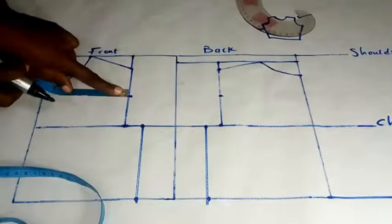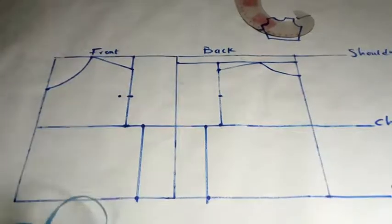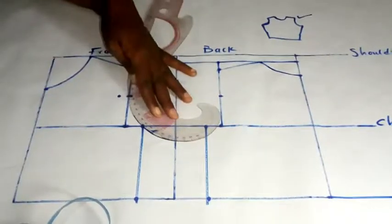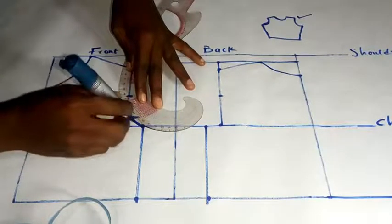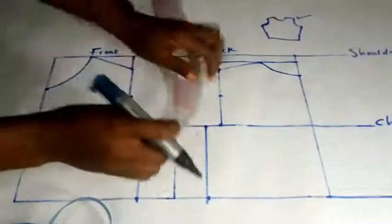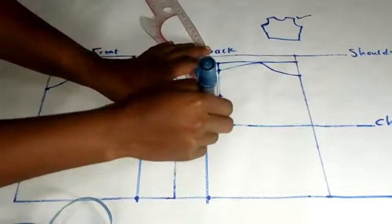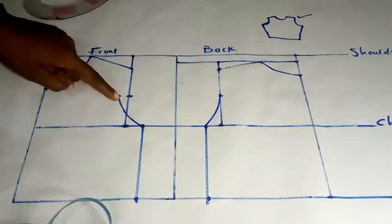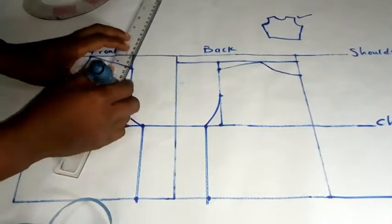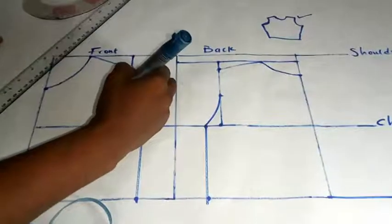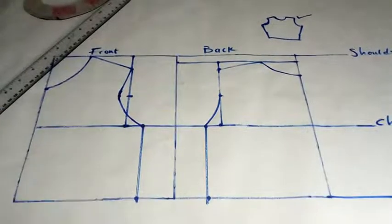Now on the front bodice, I will go in by half inch. Then I'll use my cord to connect it to the bust measurements. I'll do the same for the back. So now from here, I'll use my ruler and connect it straight to this point. Just try to blend it up a little.